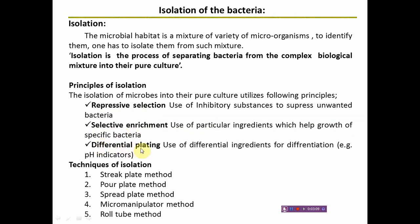Differential plating is the use of differential ingredients in the composition of a culture medium which will help easy differentiation of the microorganism of interest from unwanted bacteria. For example, use of pH indicators or color-producing substrates is most common. pH indicators like phenol red and neutral red are commonly found in bacteriological culture media. MacConkey's agar contains the pH indicator phenol red, and because of it, lactose-fermenting bacteria which produce acid appear pink — those are lactose fermenters.